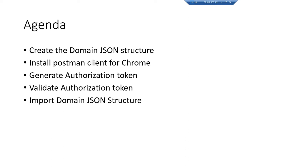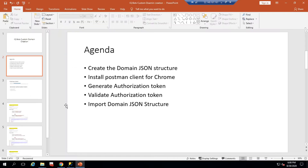I will show you how to create the JSON structure for the custom domain. We need to use a Postman client to interact with the Automation Anywhere APIs, and we will need an authorization token. At the end, we will see how to import that domain JSON into IQBots.